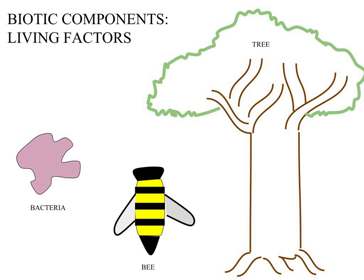Biotic components are typically sorted into three main categories. Producers, otherwise known as autotrophs, convert energy through the process of photosynthesis into food. Consumers, otherwise known as heterotrophs, depend upon producers and occasionally other consumers for food. Decomposers, otherwise known as detritivores, break down chemicals from producers and consumers into simpler form, which can be reused.